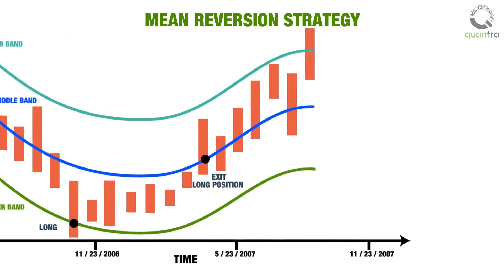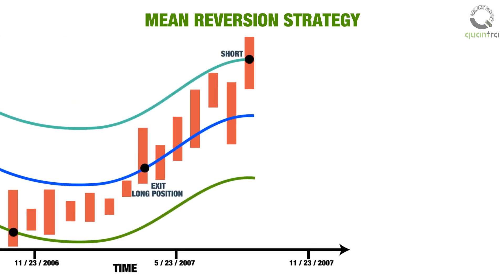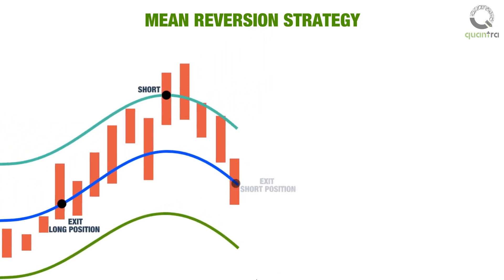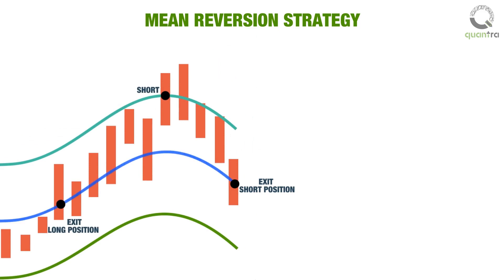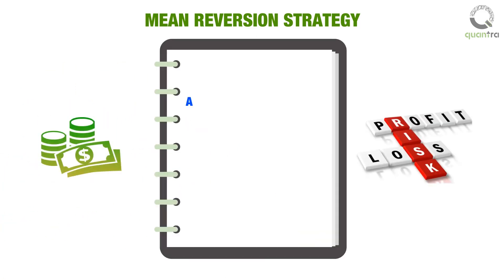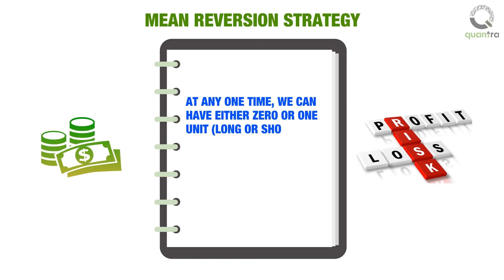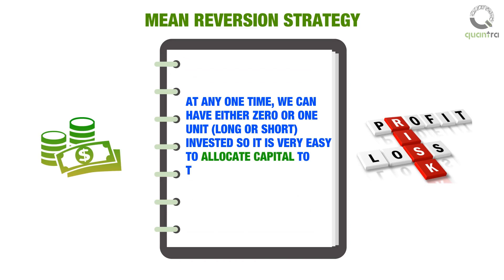Similarly, we will enter into a short position only when the price moves above the upper band, and we will exit the short position when the price mean-reverts to the current mean. At any one time, we can have either 0 or 1 unit, long or short, invested — so it is very easy to allocate capital to this strategy or to manage its risk.